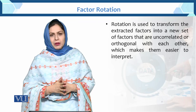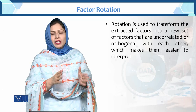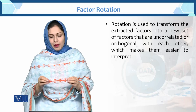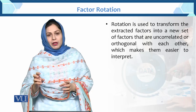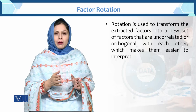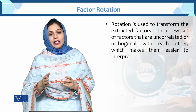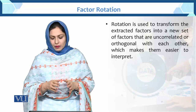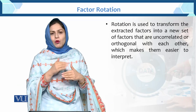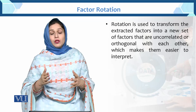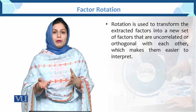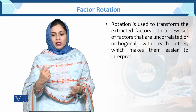यही concept हमने principal component में भी देखा था - principal component में भी हमने correlated variables को uncorrelated में convert किया था और new data generate हो गया था. Similarly rotation में हमने original variables को एक new set of variables में transform कर दिया. Transformation के बाद correlated variables uncorrelated variables में transform हो जाती हैं, जिससे interpretation आसान हो जाती है. अगर variables के between correlations high हों तो interpretation difficult हो जाती है, लेकिन transformation के बाद easily interpret हो जाए.